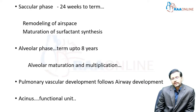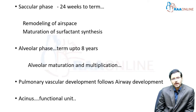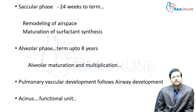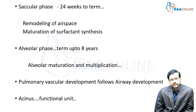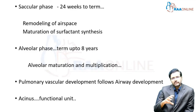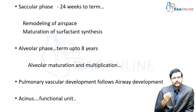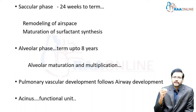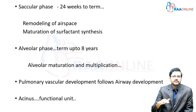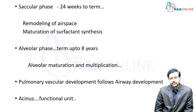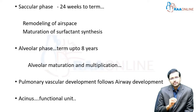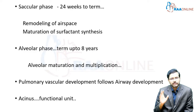The fourth phase is the saccular phase, which lasts from 24 weeks of gestation up till term. During this phase, we have remodeling of airspace — the developed air spaces undergo remodeling so that they become mature. We also have maturation of surfactant synthesis, which began in the canalicular phase and becomes more stabilized by around 24 weeks until term. This is termed as maturation of surfactant synthesis by the type 2 pneumocytes.